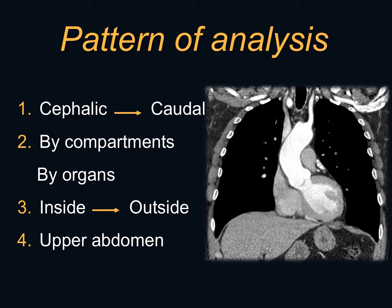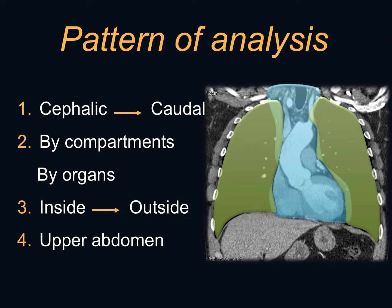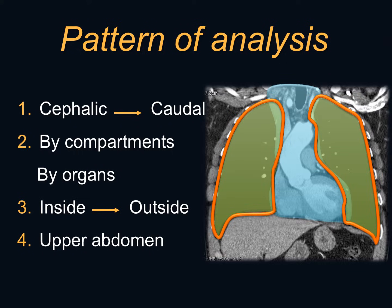Let's use these last few minutes for analysis of cross-sectional imaging and learning anatomy in axial images. As radiologists, we all have a pattern of analysis — a kind of shopping list. My personal order is to go from cephalic to caudal: I start with the mediastinal compartments, then vascular structures, then non-vascular structures, then the lungs, then the pleura, and finally the bones, soft tissues, and upper abdomen. Having this organized pattern of approach ensures you don't miss any structures in these large studies.